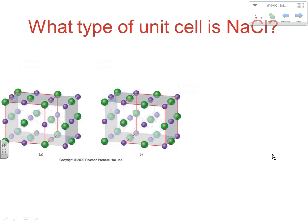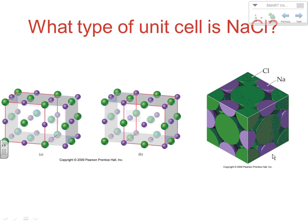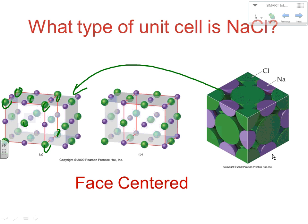If you take a look at NaCl — sodium chloride — we have a very ordered pattern, and when we draw in our box it becomes easier to see what we have. In the case of NaCl, we've got one at each corner all the way around and then one on each face. So what we have is a face-centered arrangement. From both the sodium's and the chloride's point of view, sodium chloride has a face-centered unit cell arrangement.